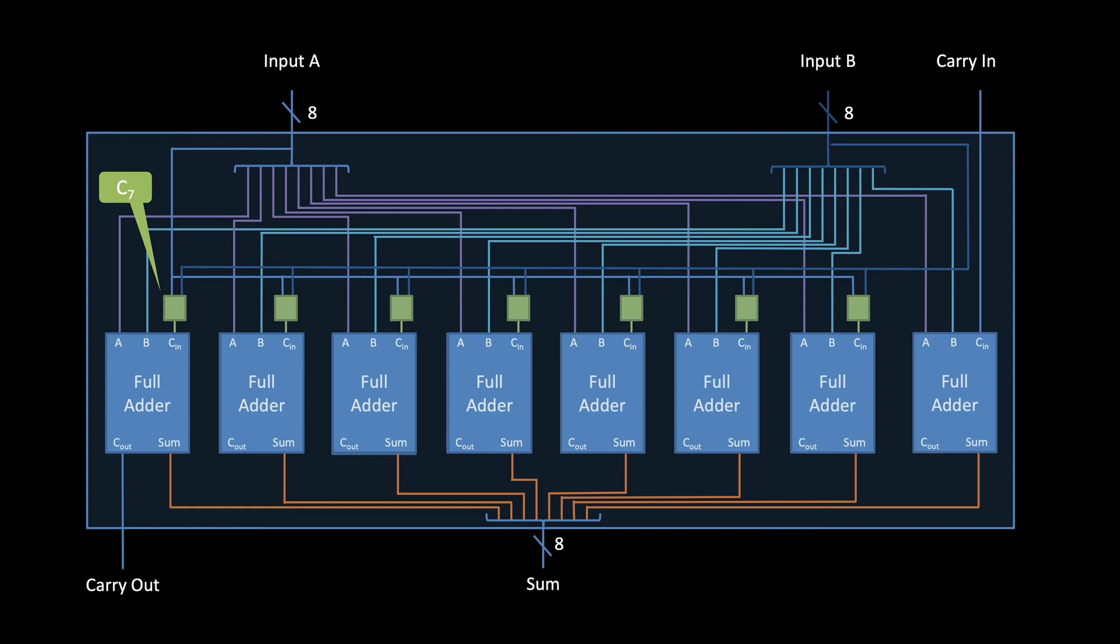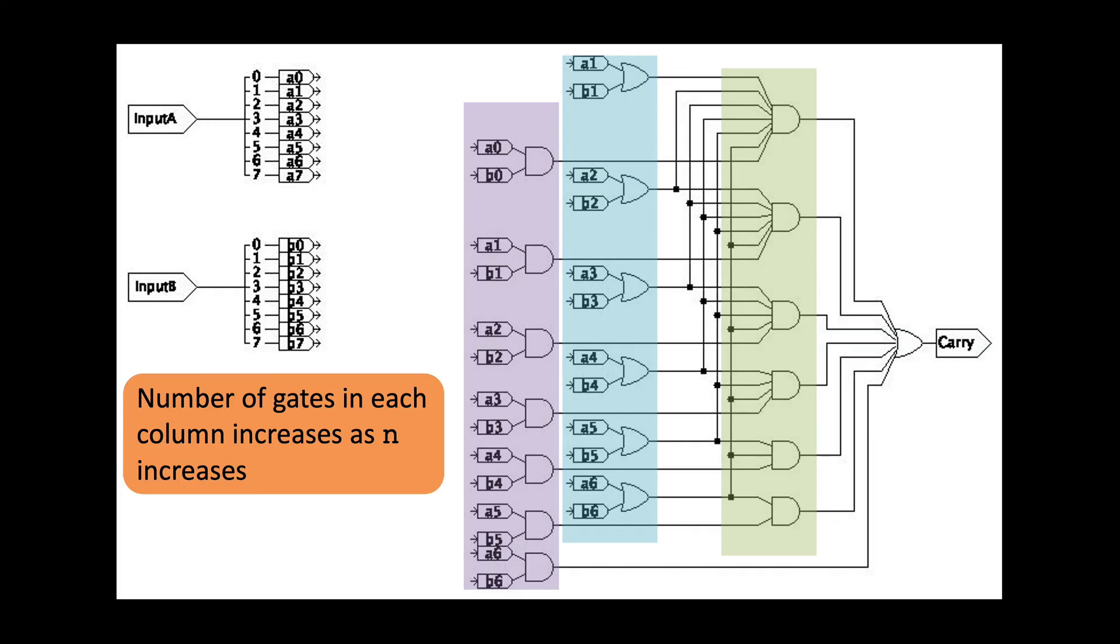First, remember that the farther left you go, the bigger the carry-in logic gets because you have more columns to consider. For example, the carry logic for column 3 only needs to consider the inputs for columns 0, 1, and 2, but the carry logic for column 7 must consider the inputs for all 6 preceding columns. This means that as we move left, the number of gates in each column increases. Furthermore, the size of the biggest AND gate also increases. So with that in mind, how exactly does the propagation delay for this circuit grow as N grows?